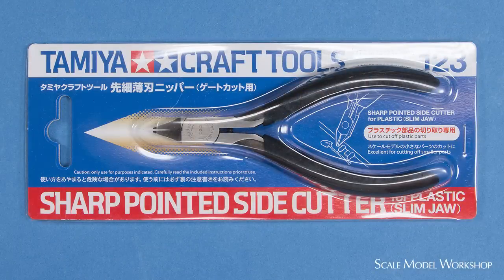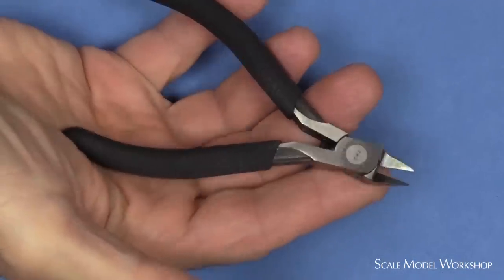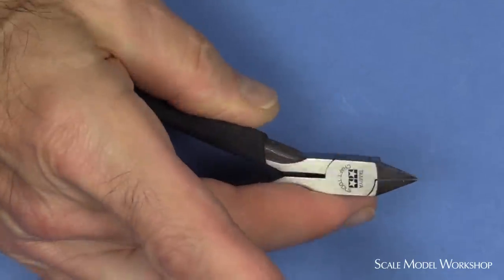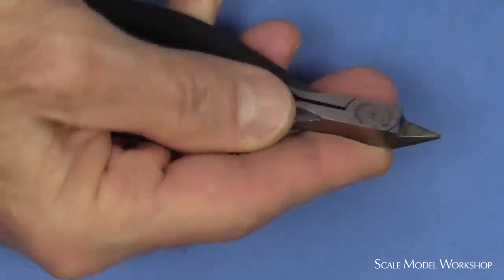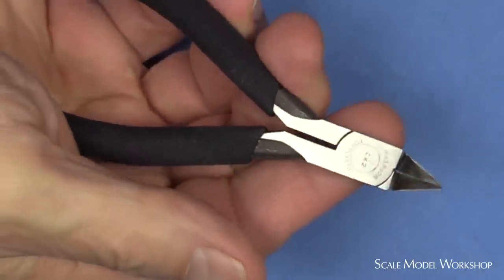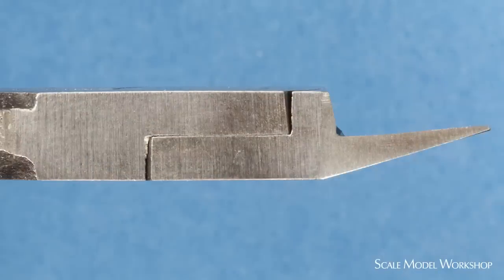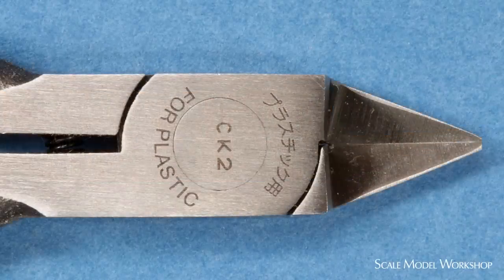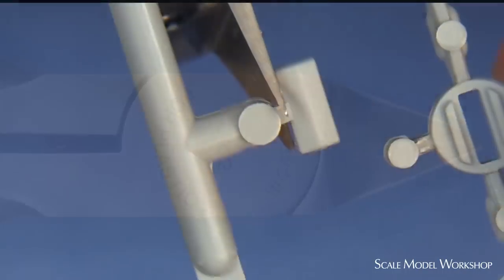The Tamiya 74123 is a completely different animal. You can tell by the construction that they're made to a different standard, more like a quality jeweler's tool with a European feel. The jaws are much thinner and have a long taper that lets them get into spots that none of the other nippers do.